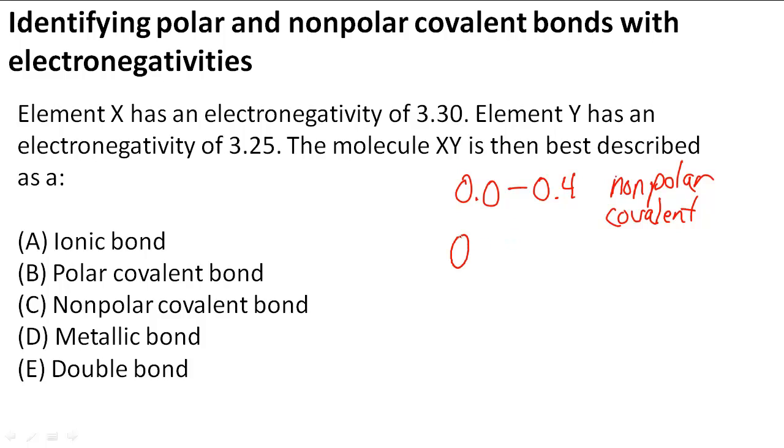But when the difference gets bigger, around 0.5 or 0.4 to 1.6, then it becomes a polar covalent bond. Not enough to become an ionic bond, but the electrons are going to be attracted to one atom more than the other atoms.